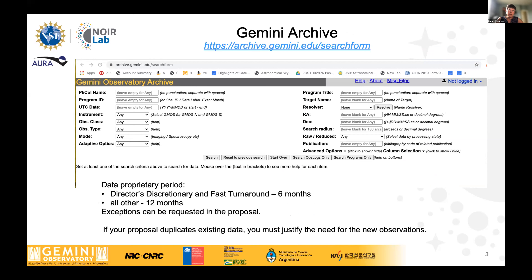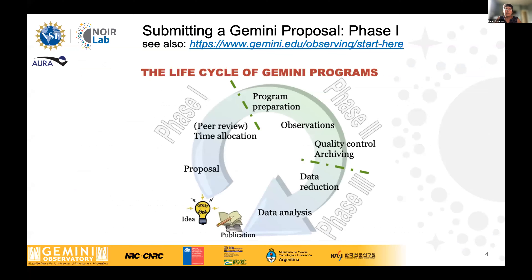PIs also get their data from the archive and the proprietary periods are six to 12 months. When you submit a proposal for observations, the tool will automatically look at the archive. And if there is anything that looks like a duplicate of what you are asking to do, it will be flagged and you'll need to justify why you need the new data. So it's to your advantage to go check out the archive. We use what we call the Phase One Tool for all observing modes — also called PIT. Everything I'll be talking about next, you would use the same tool to submit your proposal.